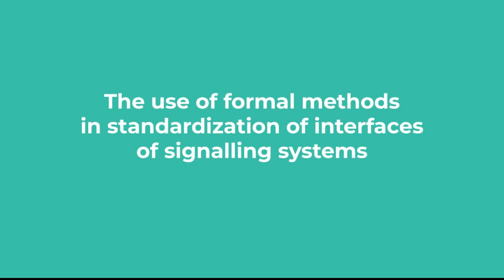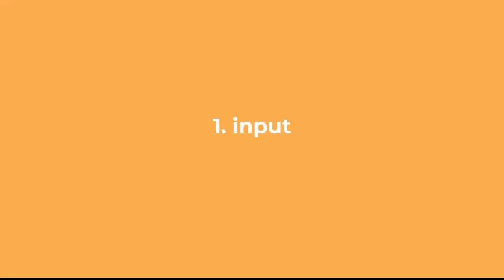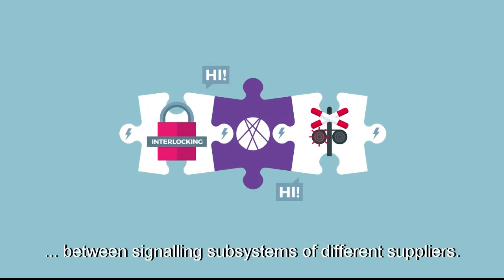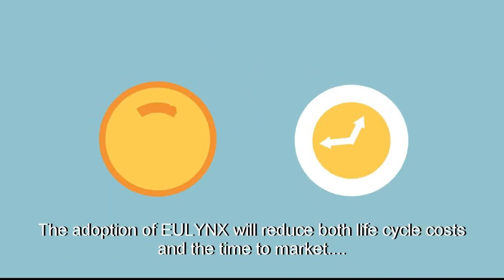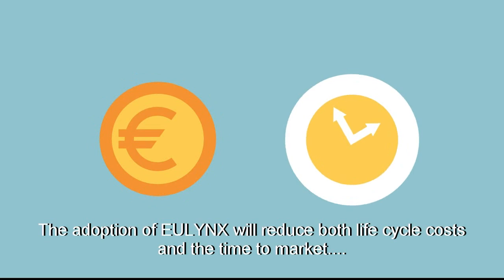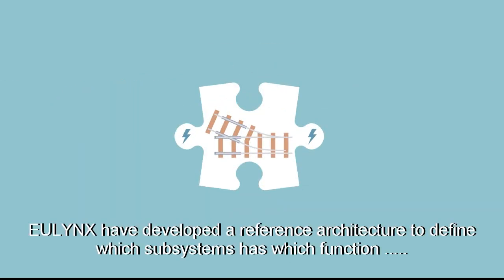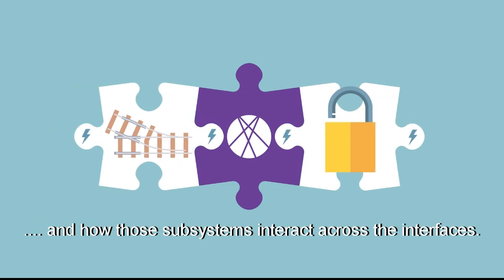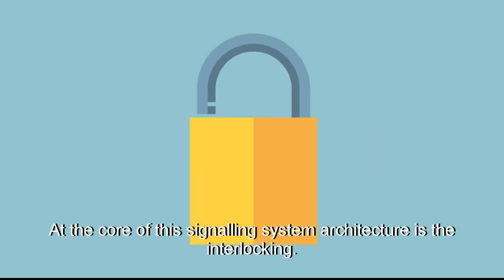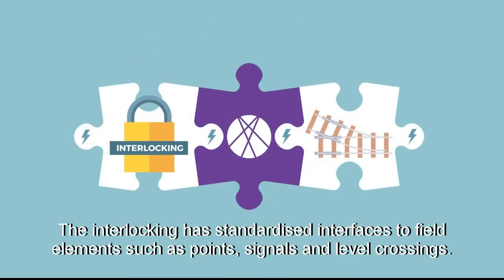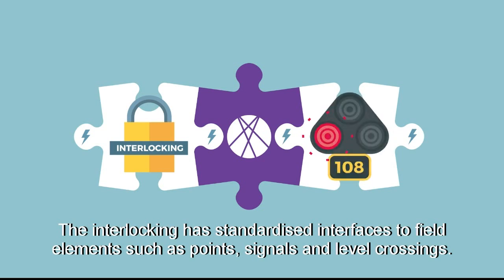The use of formal methods and standardisation of interfaces of signaling systems. In ULINX, the European Infrastructure Managers standardise the interfaces between signaling subsystems of different suppliers. The adoption of ULINX will reduce both lifecycle costs and the time to market, which were caused by repetitive developments. ULINX have developed a reference architecture to define which subsystem has which function and how those subsystems interact across the interfaces. At the core of this signaling system architecture is the interlocking, which has standardised interfaces to field elements such as points, signals and level crossings.